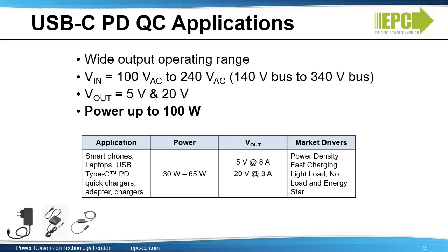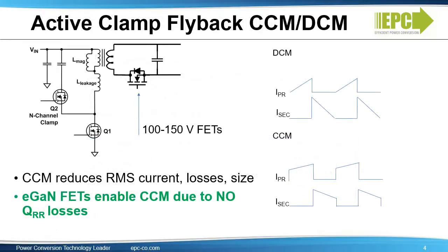eGaN enables miniaturization, very high efficiency, and excellent thermal performance. The typical topology for these applications is the active clamp flyback, which can operate in continuous current mode (CCM) or discontinuous current mode (DCM). CCM mode reduces RMS current, losses, and size. eGaN FETs enable CCM mode due to the fact that there is no reverse recovery — a silicon MOSFET would have too many QRR losses in CCM mode. This topology requires 100-volt or 150-volt FETs for a 20-volt output.